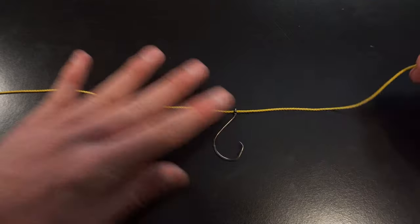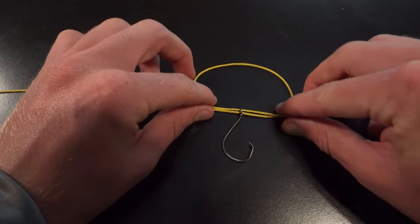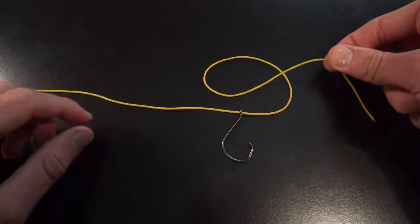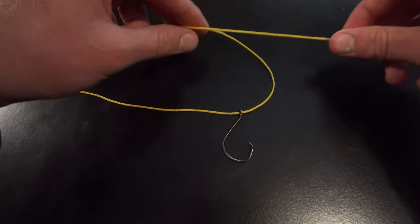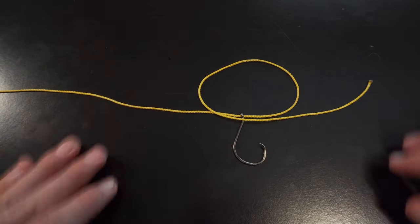And to start the knot it's extremely simple. All you're going to do is take your line, either side doesn't matter, and just loop it just like that. You're just looping that line, you're not putting it through the eye, just like that.